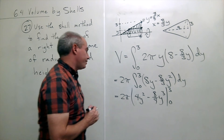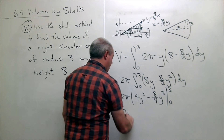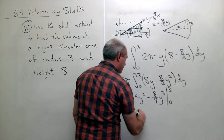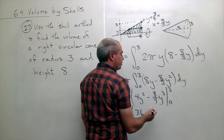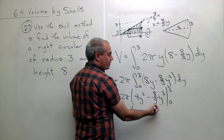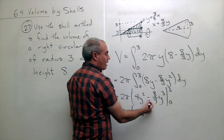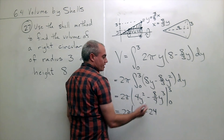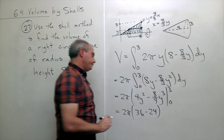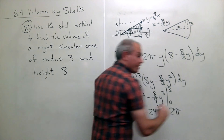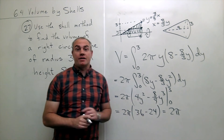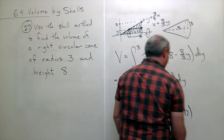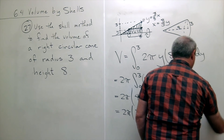Let's plug things in. Plugging in three: three squared is nine, times four is thirty-six. Three cubed is twenty-seven; twenty-seven divided by nine is three, so I get minus eight times three, which is minus twenty-four. Plugging in zero just gives zero. So we get two pi times thirty-six minus twenty-four. Thirty-six minus twenty-four is twelve, and so my answer is twenty-four pi.